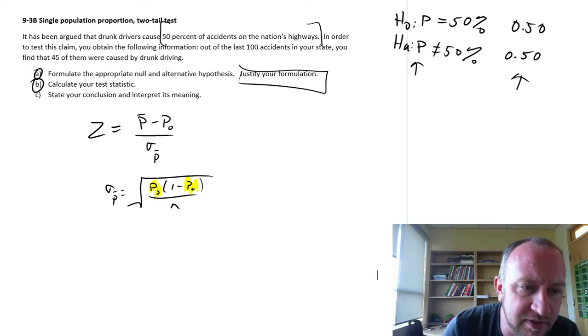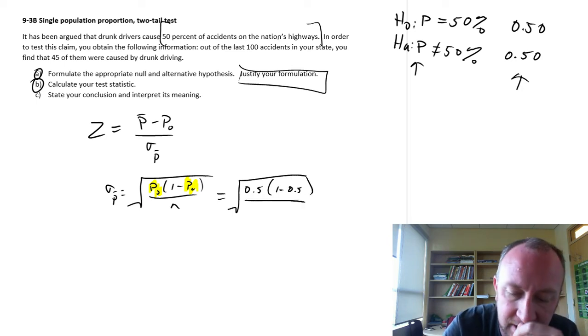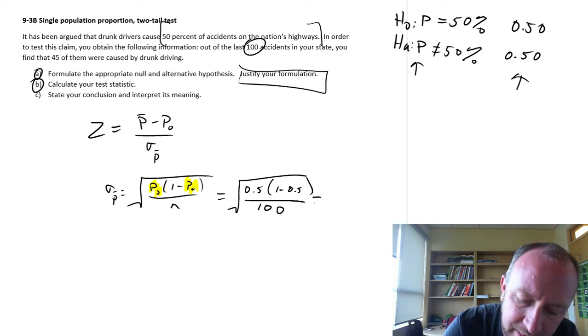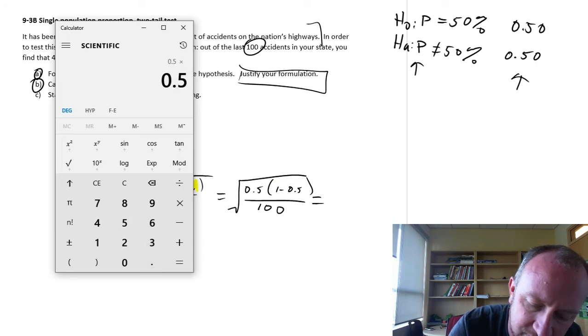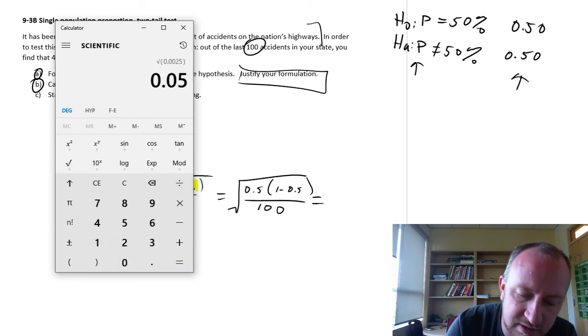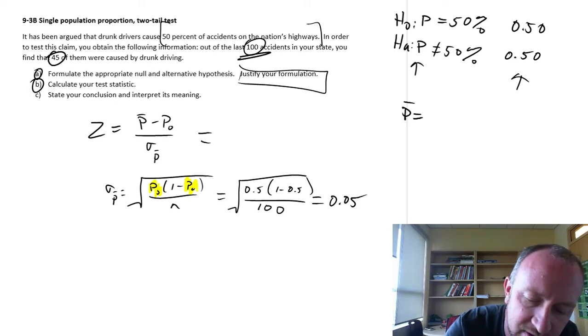Let's finish this up. So here this is going to be the square root of 0.5 times 1 minus 0.5 over our sample was 100 accidents. So this is going to be 0.5 times 1 minus 0.5 is going to be 0.5 again divided by 100 and square root, so 0.05.